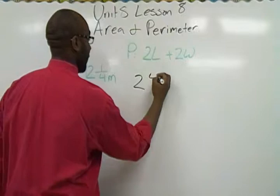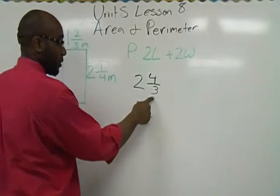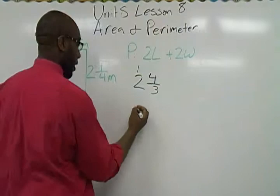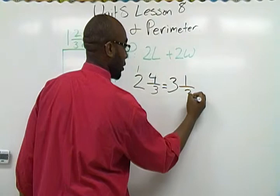One and two-thirds plus one and two-thirds gives me two and four-thirds. Now that's improper, two and four-thirds. So we know three goes into four one time so we're going to bring that over and we'll have one left over. So our new fraction, our mixed number is three and one-third.